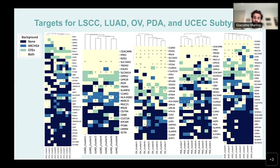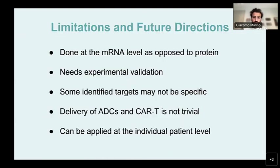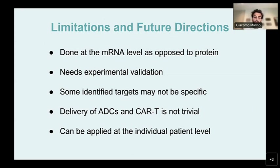There are a few limitations and future directions to this approach. First, the analysis is done at the mRNA level as opposed to the protein level, and these results need to be experimentally validated. Additionally, some targets may be identified across many different cancer types and may not be specific to a certain subtype. The delivery of ADCs and CAR-T therapies is also not a trivial process. One other thing to note is that this approach can be applied at the individual patient level.